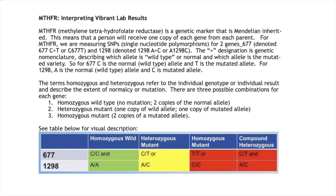The terms homozygous and heterozygous refer to the individual genotype or individual result and describe the extent of normalcy or mutation. There are three possible combinations for each gene. Homozygous wild type means there's no mutation — two copies of the normal allele.